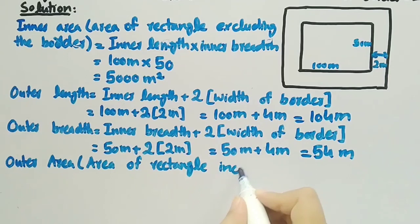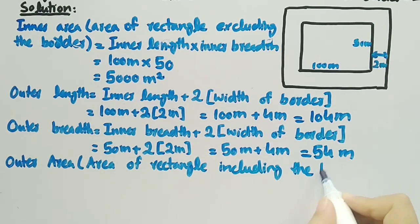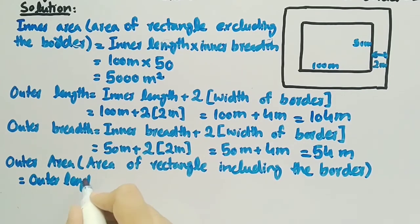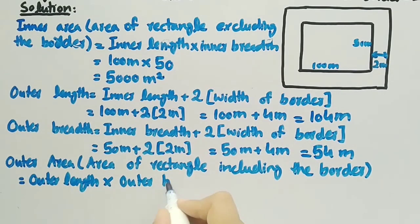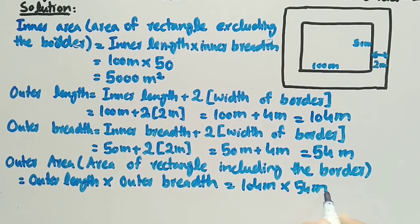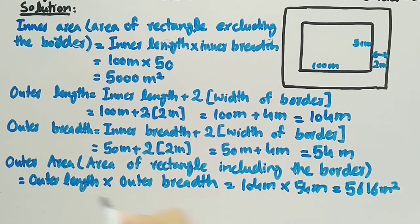Outer area is equal to outer length multiplied by outer breadth. Substituting the values, outer length is 104 meter multiplied by outer breadth 54 meter. Multiplying these two, we get 5616 meter square. So the outer area is 5616 meter square.